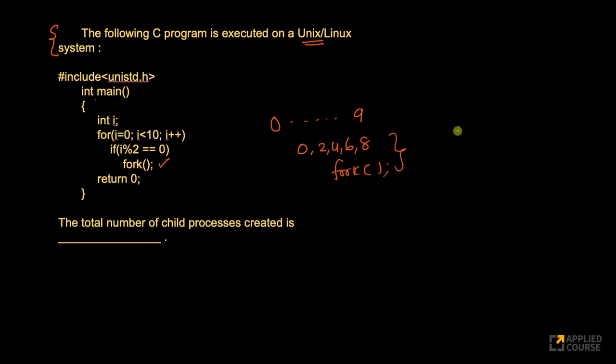This fork has been called 5 times. Now it says return 0. Now the question here is the total number of child processes created. Very important, very interesting question. The keyword here is the number of child processes.